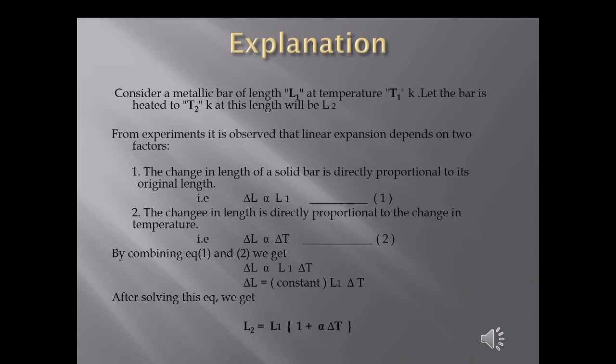The first factor: increase in length is directly proportional to the original length L1 — greater original length gives greater increment. The second factor: increase in length is directly proportional to the change in temperature ΔT — more temperature gives more increase. Combining both: ΔL ∝ L1·ΔT, where ΔL = L2 − L1. Removing the proportionality sign introduces a constant alpha, giving the final result: L2 = L1(1 + α·ΔT).